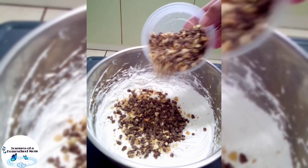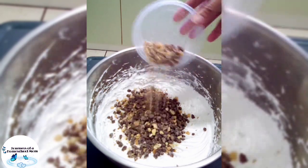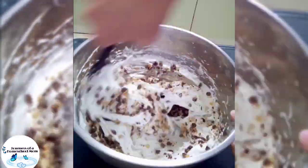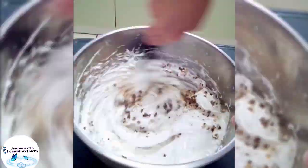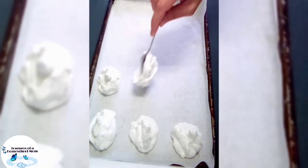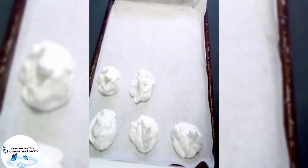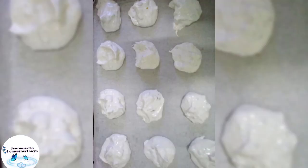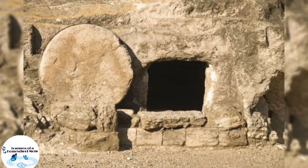Fold in the broken nuts and chocolate chips. Drop by teaspoons onto a wax paper-covered cookie sheet. Explain that each mound represents the rocky tomb where Jesus' body was laid.